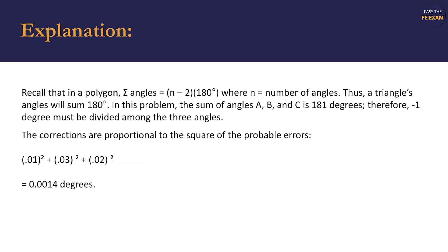We will have to rely on our knowledge of basic trigonometry to solve this problem. Recall that in a polygon, the sum of angles is equal to quantity n minus 2 times 180 degrees, where n represents the number of angles in the polygon. Thus, a triangle's angles will sum to 180 degrees. In this problem, the sum of given angles A, B, and C is 181 degrees. Therefore, negative 1 degree must be divided amongst the three angles.